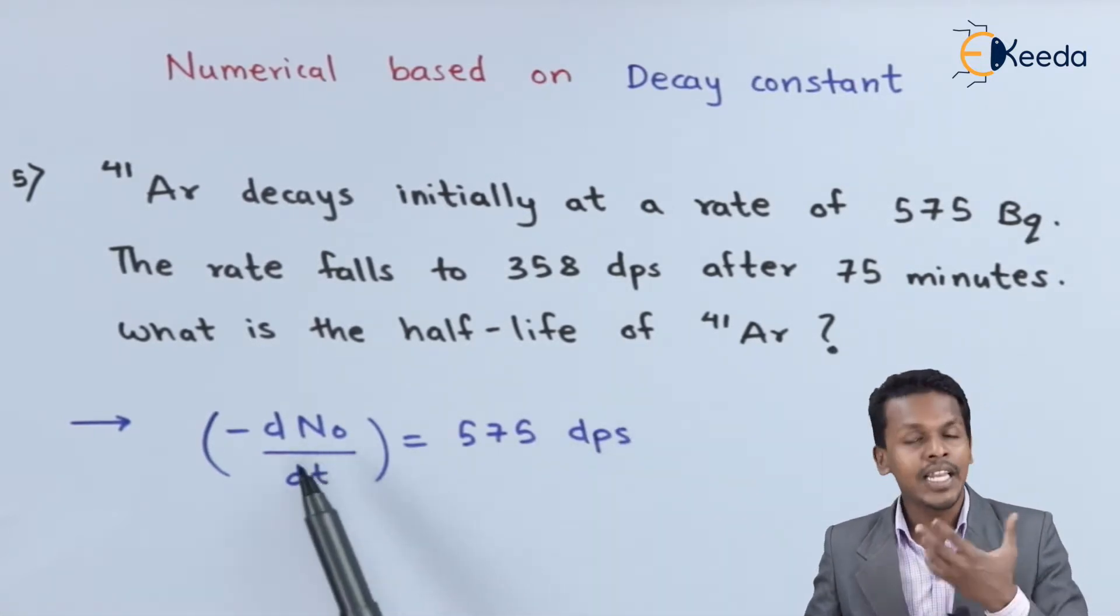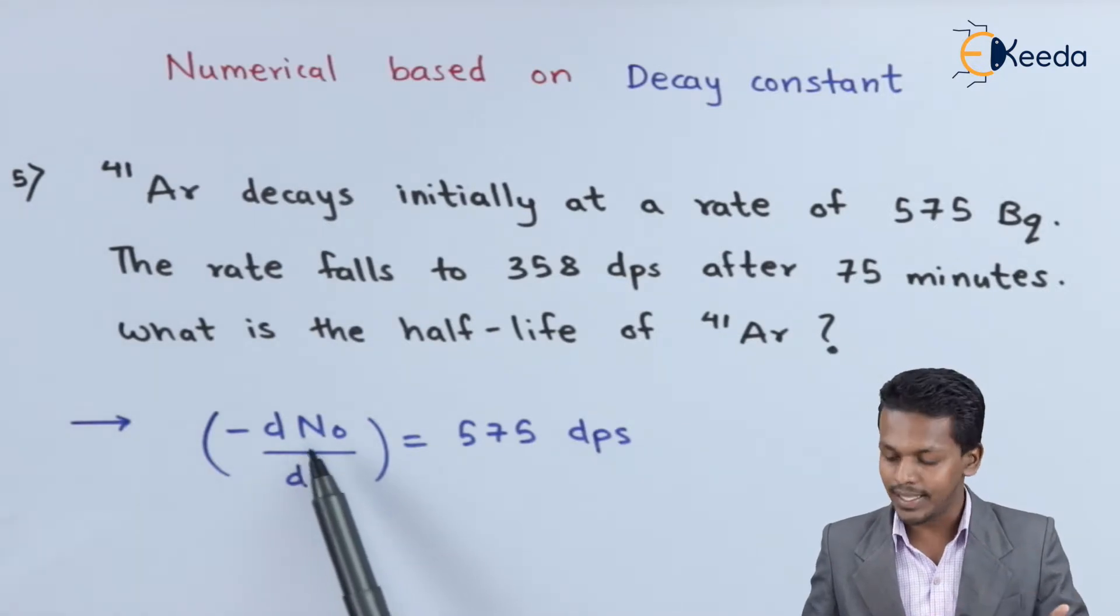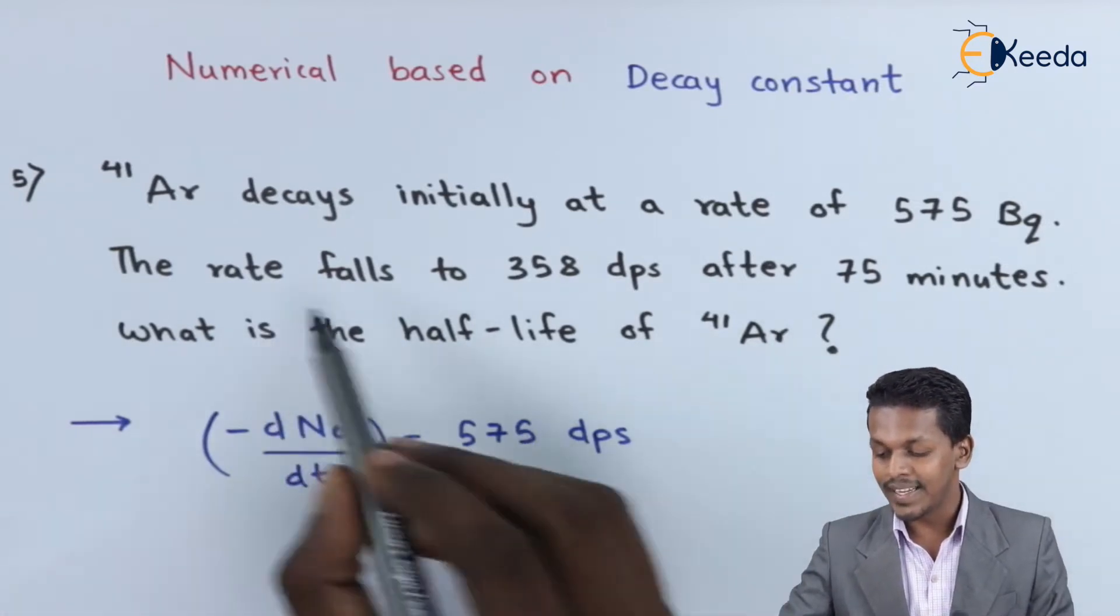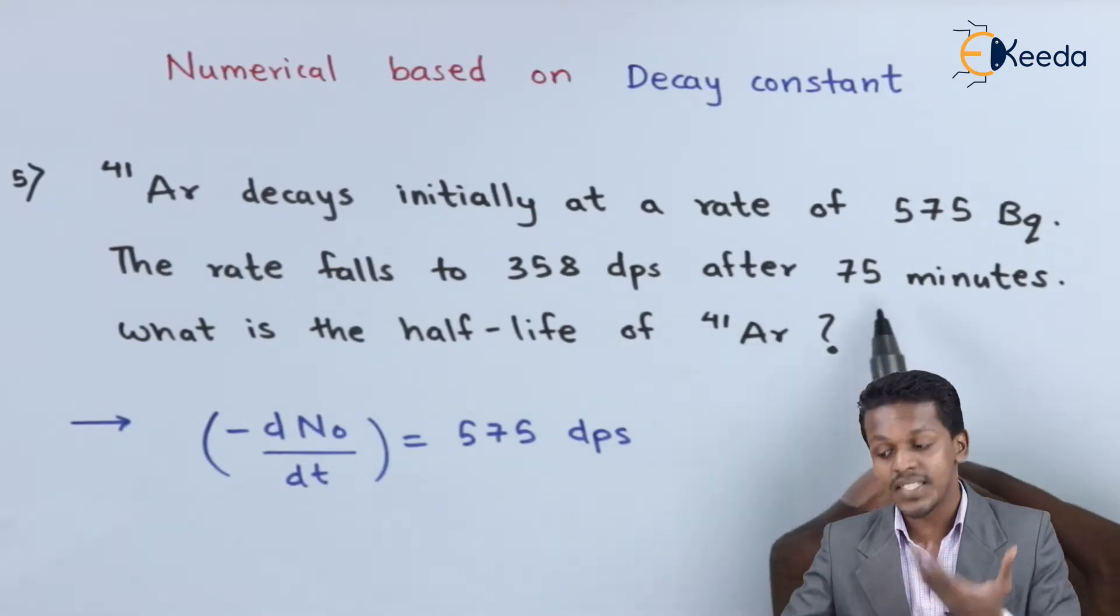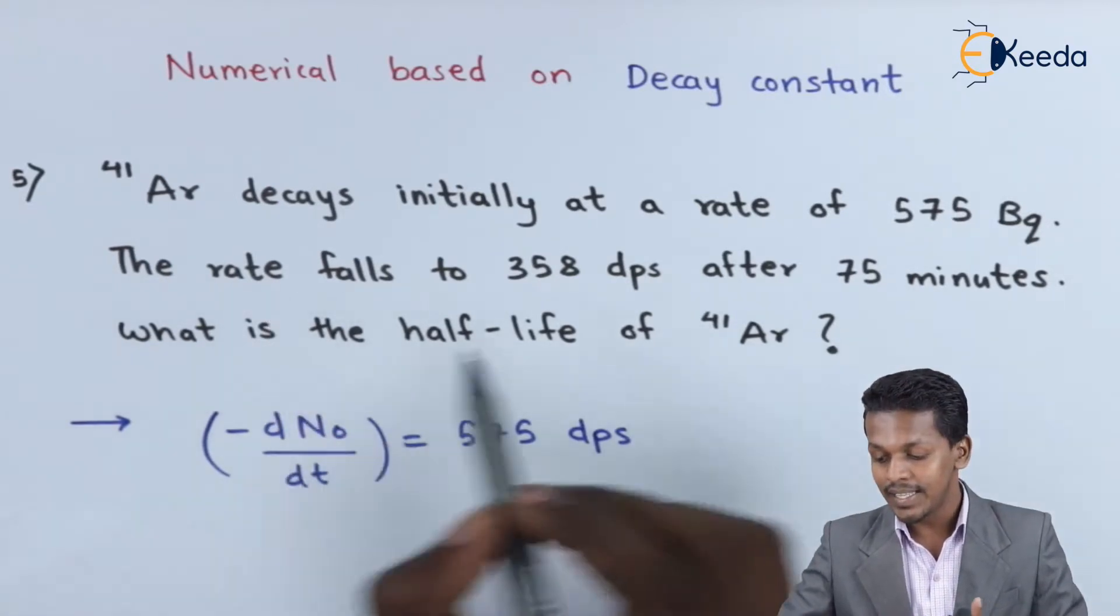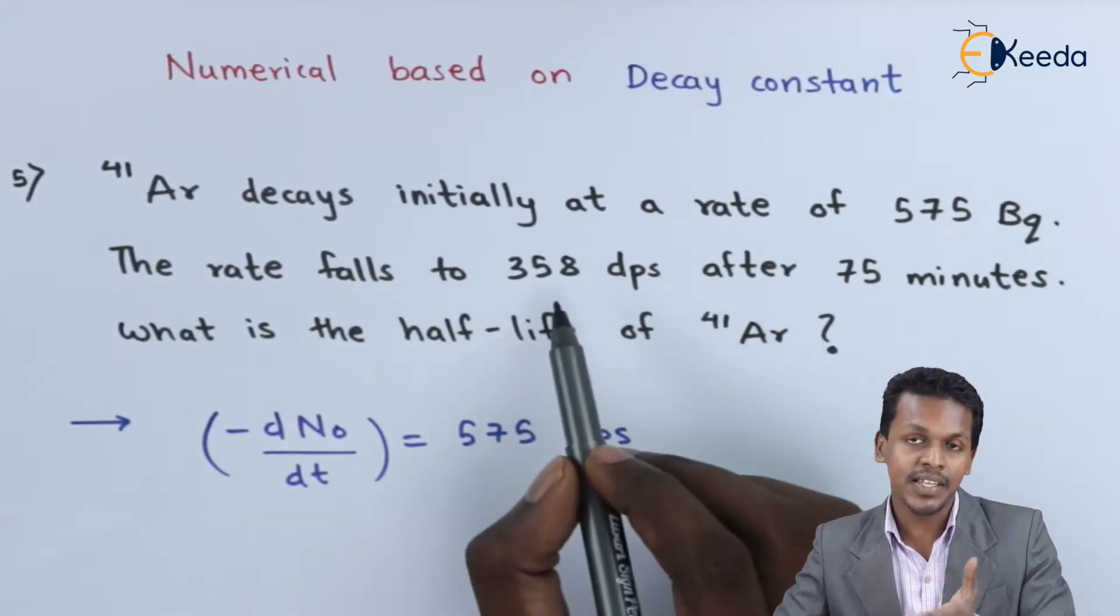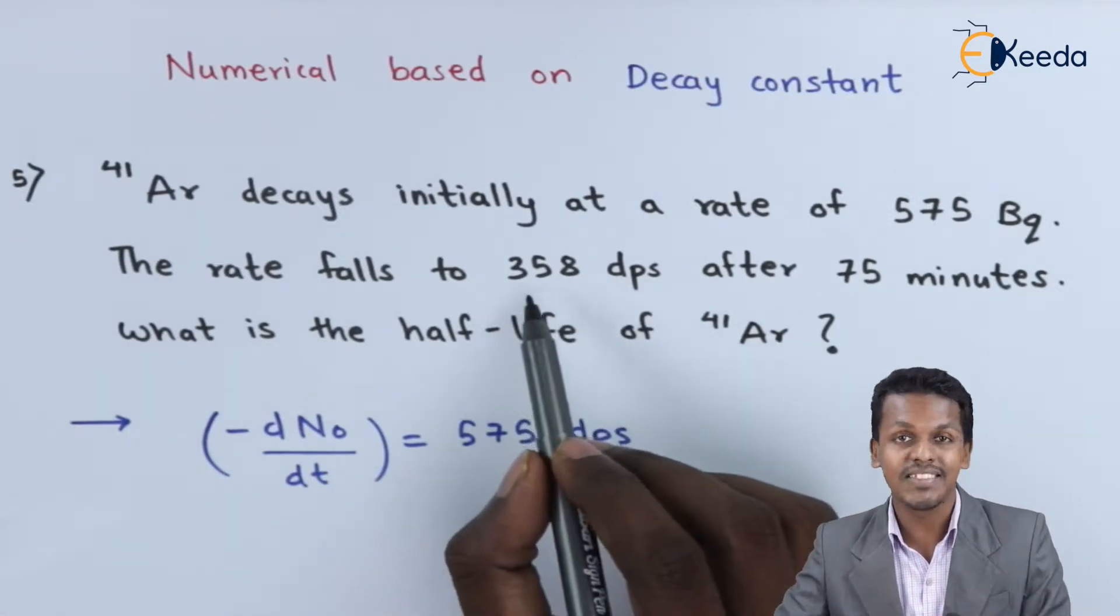Here we can say the initial number of nuclei present is N₀, which is found to be 575. And we've also learned that the rate falls after 75 minutes. Therefore, after 75 minutes, the dps (disintegration per second) has been found to be 358.